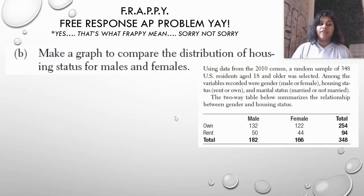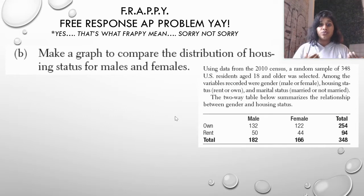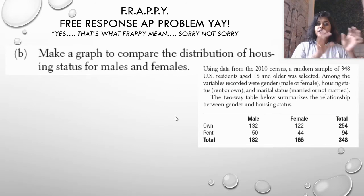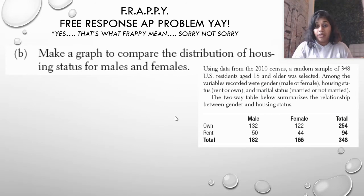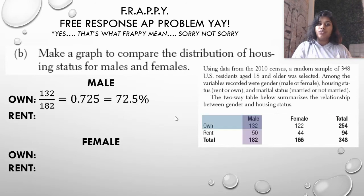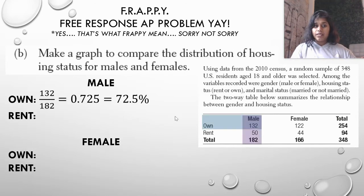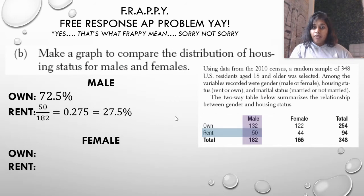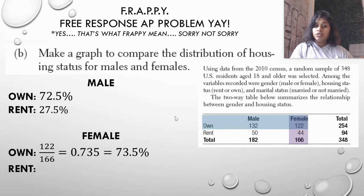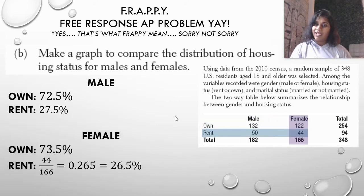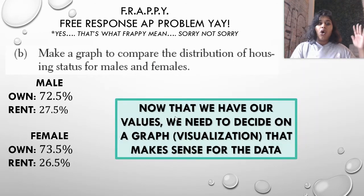To make a graph comparing the distribution of housing status for males and females, it's a two-step process: first get all of our distributions, then visualize them. We already got males who own. Now let's do males who rent, females who own, and females who rent. There we go — now we have all four values.